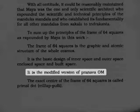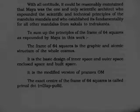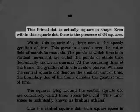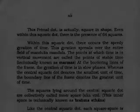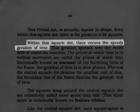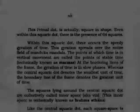It is the modified version of Pranava Ohm. The exact center of the frame of 64 squares is called the primal dot — a fair description of singularity. This primal dot is actually square in shape. Even within this square dot, there is the presence of 64 squares. This is a perfect description of a fractal recursive structure. Within this square dot, there occurs the speedy gyration of time, and this describes the spin component of space-time.